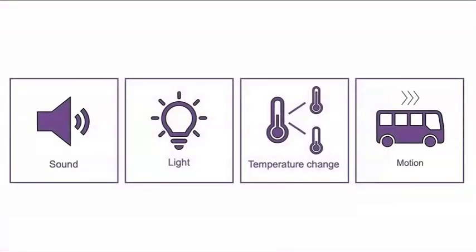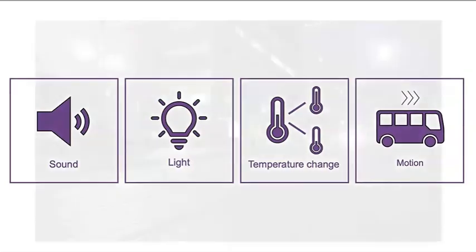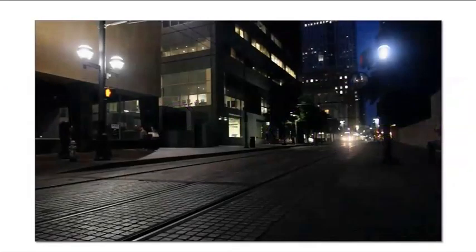How can we tell whether energy is present? Remember, energy is necessary to make something happen, and energy indicators show us that energy is present. Energy indicators are sound, light, temperature change, and motion. Now let's watch a video of a light rail train. As you watch, pay attention to the energy indicators.